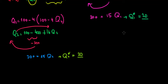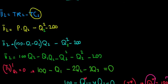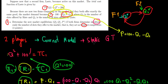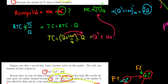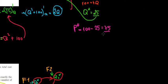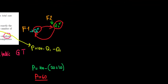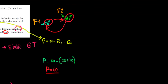So the optimal quantity is 20 units for each firm. The question also asked for the market price. The price is P = 100 - (Q1 + Q2) = 100 - (20 + 20) = 100 - 40 = 60. As a comparison, under monopoly the price was 75 and quantity was only 25. Now with two players, total quantity supplied increases to 40, which drives the price down to 60 — and that's exactly what this model is showing.